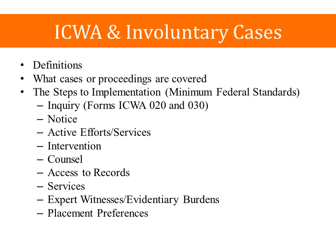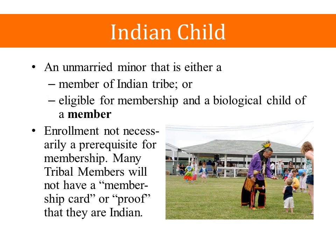We're going to go through some definitions and talk about what cases are covered by ICWA and the minimum federal standards. Indian child is a defined term within the Indian Child Welfare Act — an Indian child is defined as an unmarried minor that is either a member of an Indian tribe or eligible for membership and a biological child of a member. It is not necessary for the child to be eligible in the same tribe where the parents have membership.